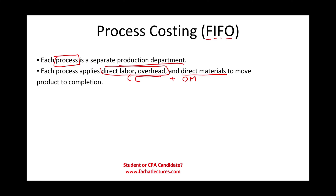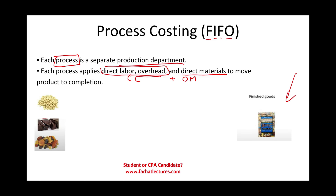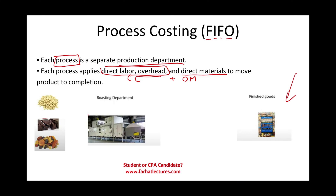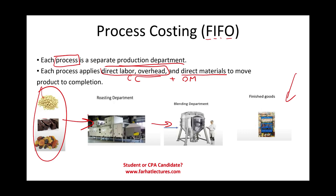For illustration, we're going to be producing finished goods called the best mixed nuts. The materials we need are nuts, chocolate, and dried fruits. We have two separate processes: the roasting department, where we mix and roast all the direct material, and then the blending department, where we blend and package. The goods come out packaged as finished goods.